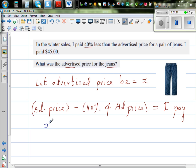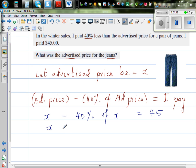This is X minus 40% of X is equal to I pay, that is $45. So this is a simple equation. This is X minus 40% as a decimal is 0.4, of means times X is equal to 45.